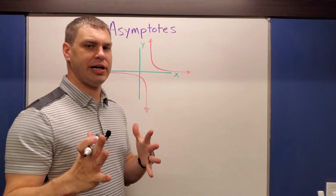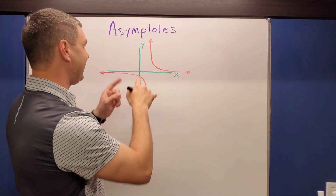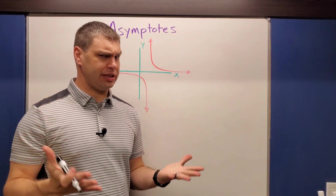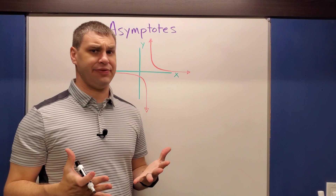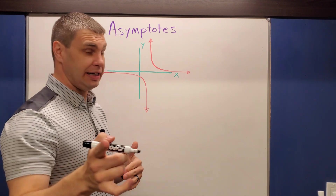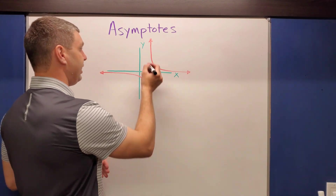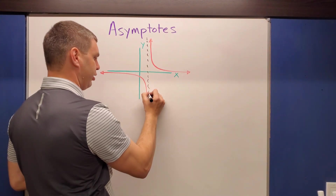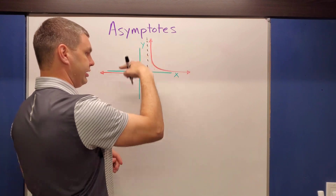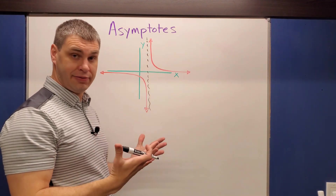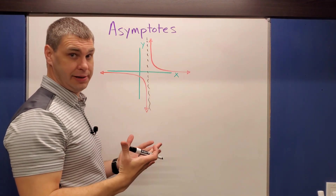Hey guys, I'm the math professor. Today we're talking all things asymptotes. If I were to give you a 15-second definition of what an asymptote is, it is going to be a line that a curve — like these red ones here — approaches, but never ever crosses.